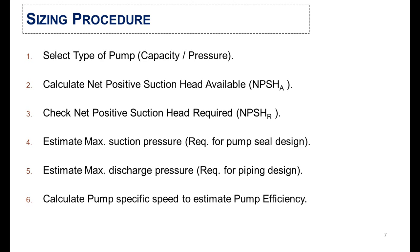In the third step, you will verify the net positive suction head available against the net positive suction head required — this is the critical part of pump sizing. In the fourth step, you will estimate the maximum suction pressure for pump seal design. In the fifth step, you will estimate the maximum discharge pressure for downstream equipment and piping design. In the last step, you will calculate the pump specific speed to estimate the pump efficiency.